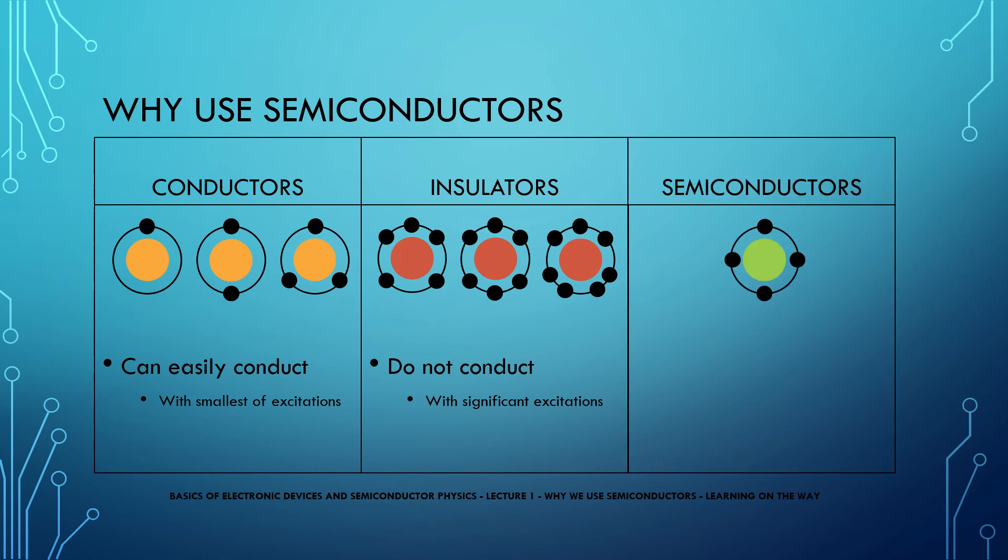But semiconductors have 4 electrons in their outermost shell which makes them special, and they can conduct when a limited or finite amount of excitation is provided. This means that a semiconductor material would only conduct in a circuit if it is supplied with a limited but finite amount of excitation.